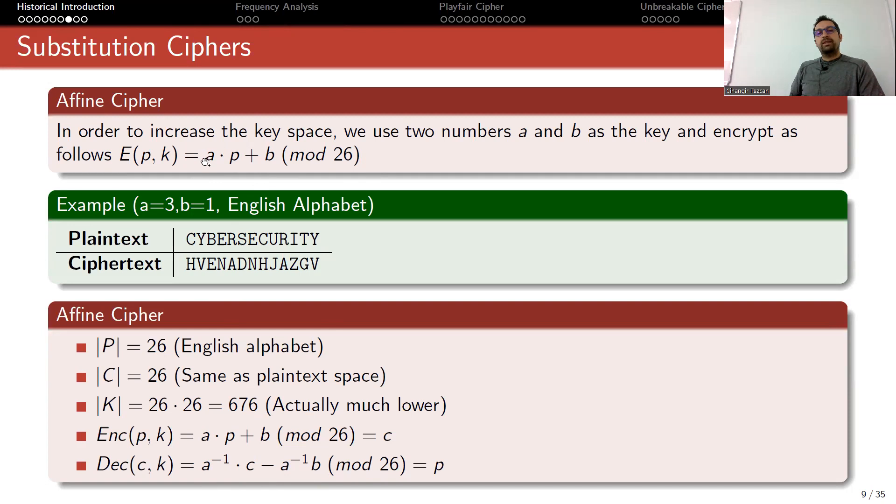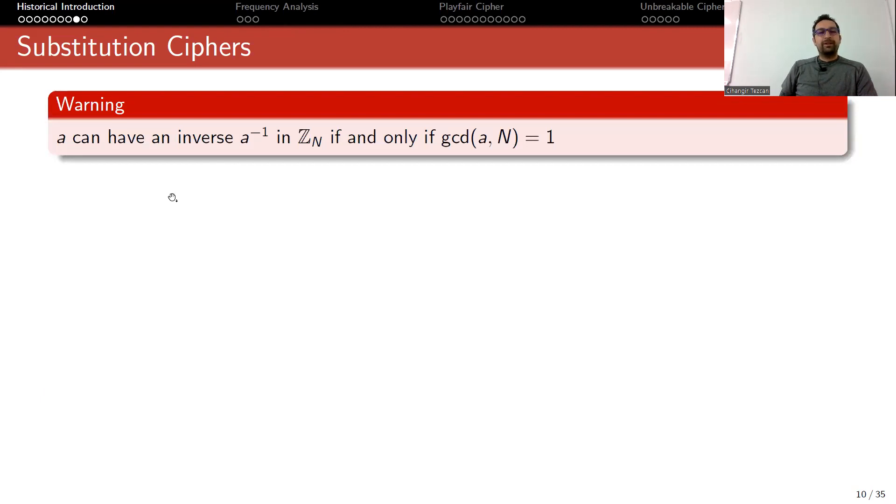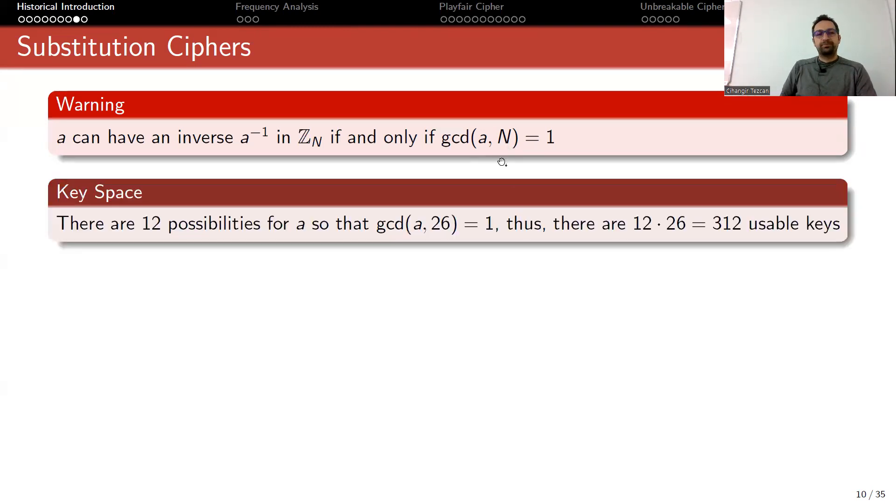Although you perform encryption like this, you have to perform decryption with a inverse. Here a to the power minus one, or a inverse, means the number which makes a multiplied with a inverse result in 1 modulo 26. The question arises: does every number have an inverse in modulo 26? If numbers are even, you cannot have an inverse because you cannot multiply an even number with another number and obtain 1 modulo 26 - it will be even at the end. Here's a bit of mathematics: a number can have an inverse if and only if the greatest common divisor of a and n equals 1. In our example n is 26, so a cannot be even, but also cannot be anything like 13 because 13 also divides 26. There are actually 12 possibilities for a so that greatest common divisor of a and 26 is 1. There are actually fewer usable keys.